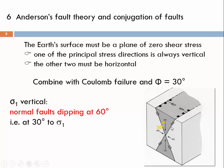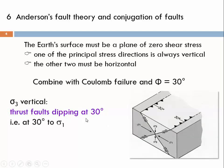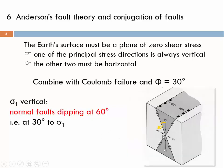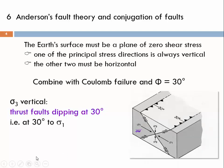Obviously, the conjugated fault on the other side would also have a 30 degree angle with sigma 1. If we place sigma 3 vertical, we form thrust faults dipping at 30 degrees because the largest principal stress vector is now horizontal. We again see conjugated thrust faults dipping at 30 degrees, and sigma 2 is at the intersection plane of the two conjugated faults.